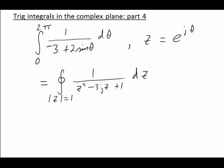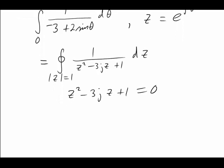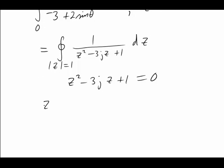The function was 1 over z² - 3jz + 1. We noted that we need to find the poles of that integrand and decide whether they are inside or outside the contour. We therefore solved the quadratic equation z² - 3jz + 1 = 0. We found two roots. Both of them were purely imaginary. We found z = (3 ± √5)/2 × j.